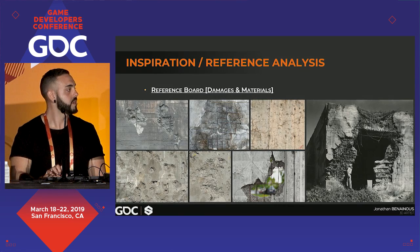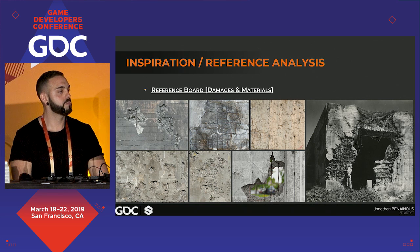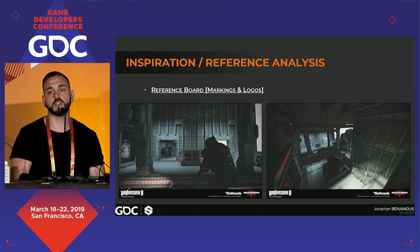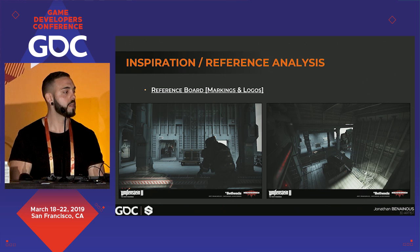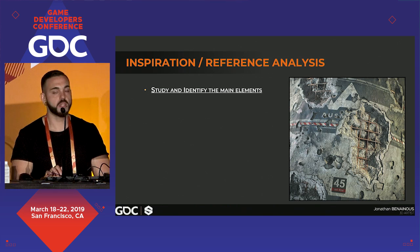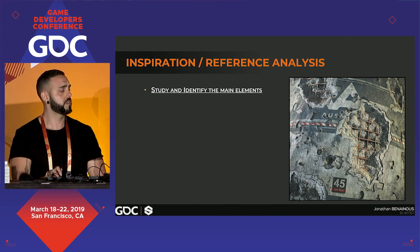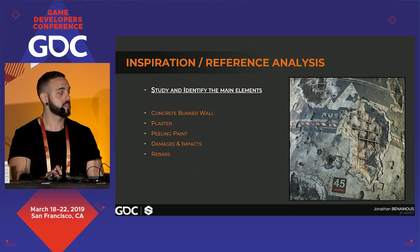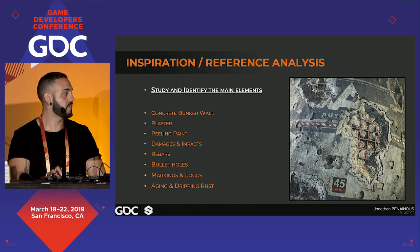For the reference analysis: the reference board includes old concrete from a broken bunker, damages, holes, bullet holes, rusted rebars, cracks, etc. I also wanted to add a sci-fi twist. I love the game Wolfenstein II: The New Colossus and collected screenshots from my favorite environments — courtesy of Aie Sanchez. I took inspiration for the markings, logos, and color palette. The main elements identified are: a concrete bunker wall, plaster, peeling paint, damages and impacts, rebars, bullet holes, markings and logos, and aging with dripping rust.